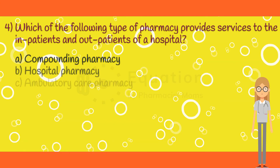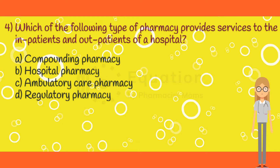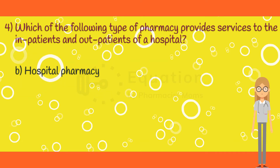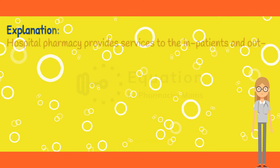Question 4. Which of the following type of pharmacy provides services to the inpatients and outpatients of a hospital? Option A: Compounding pharmacy. Option B: Hospital pharmacy. Option C: Ambulatory care pharmacy. Option D: Regulatory pharmacy. The correct answer is option B. Hospital pharmacy provides services to the inpatients and outpatients of a hospital.